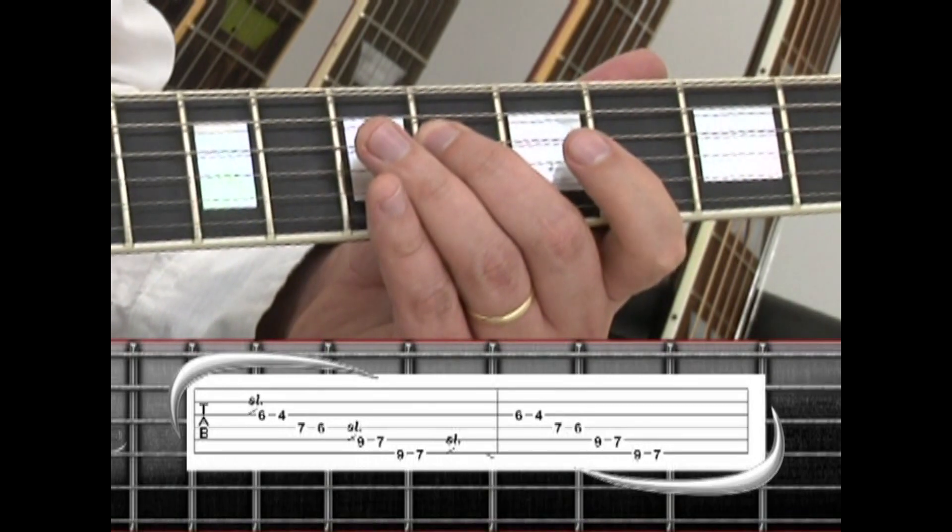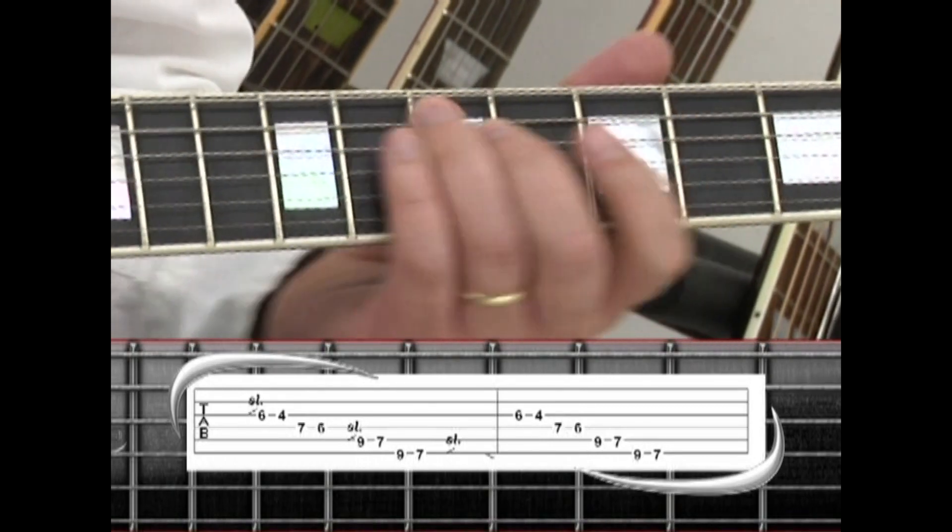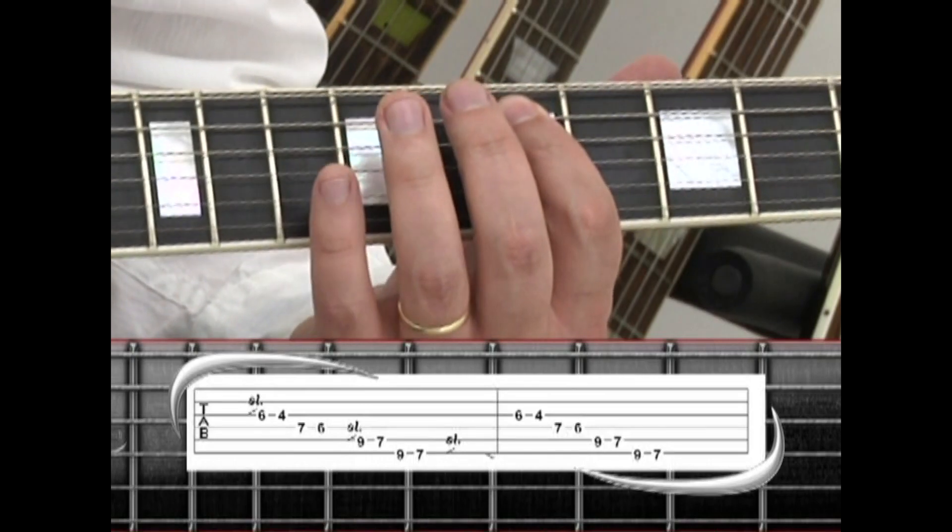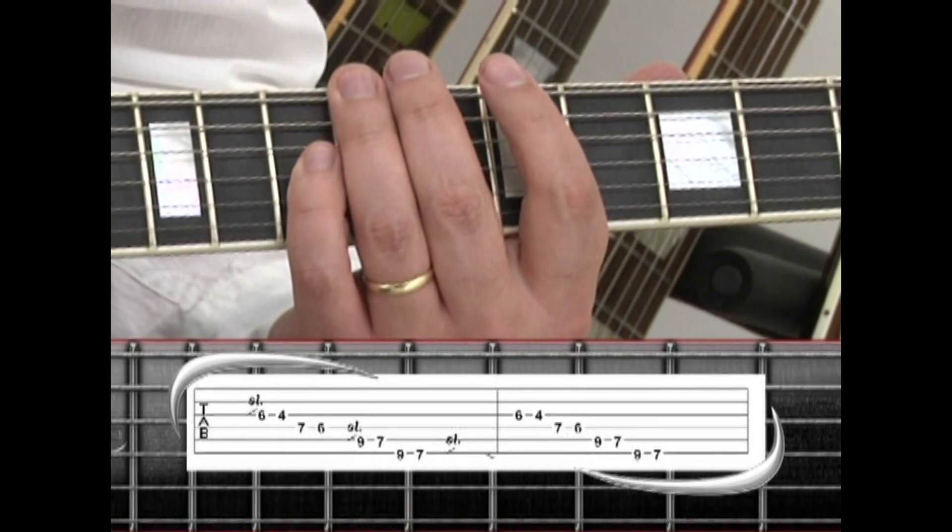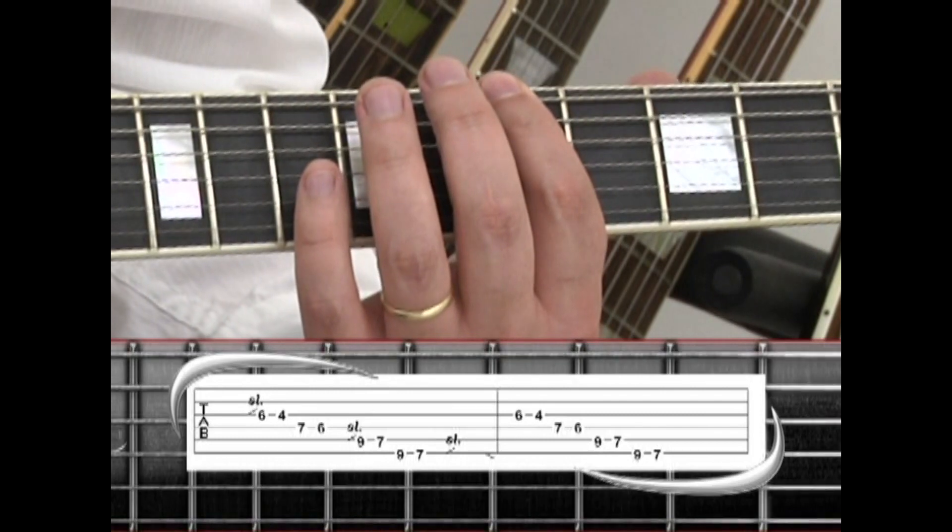Drop down to 6, on the 5th string slide up to 9, then 7, then the 6th string 9, then 7, then slide up and down the neck.